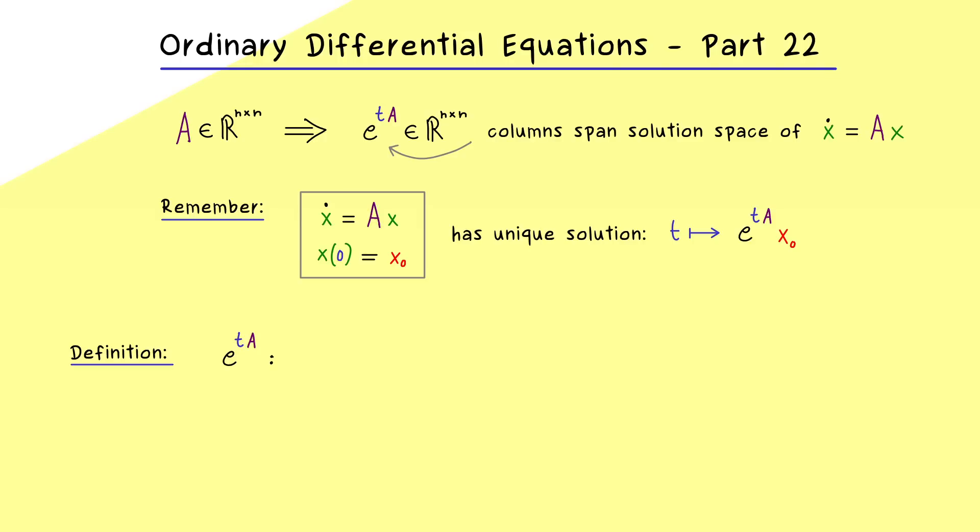This one is not complicated at all because it just uses the power series representation of the exponential function, which means we have an infinite sum with k starting from 0 and going to infinity. And then inside we have t to the power k and A to the power k divided by k factorial.